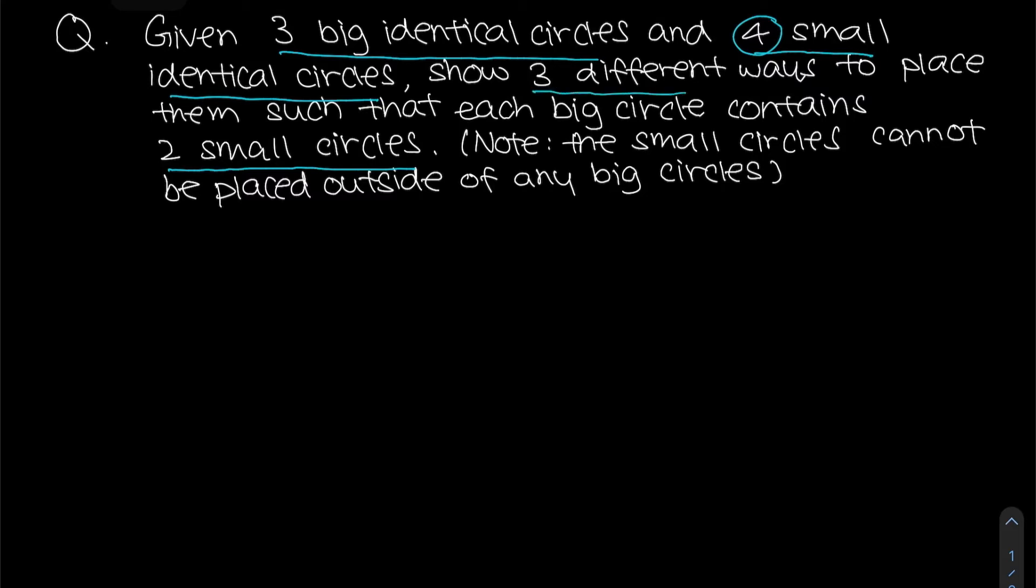So there are actually three different ways. I will show you the three different ways. For the first way, what happens is that I have three circles and my three circles, they are overlapping like that. And when they are overlapping like that, I can actually solve it straight away because I have four small circles. I simply just place four circles like that.